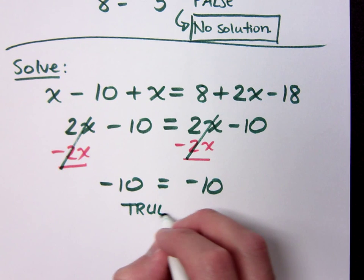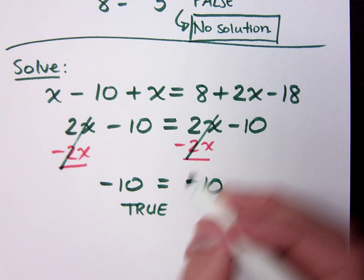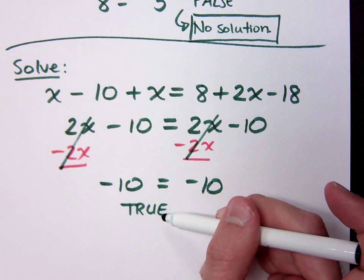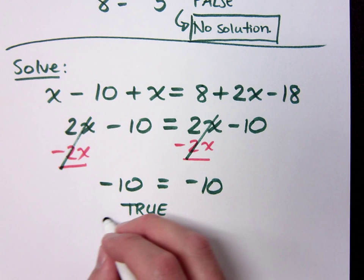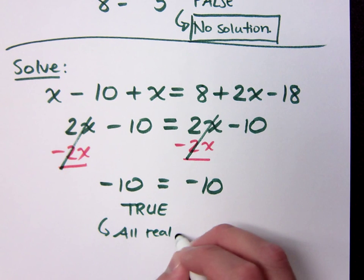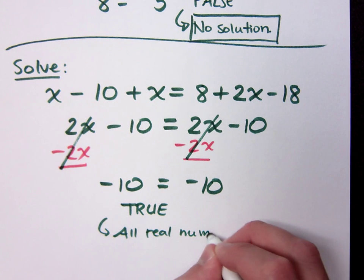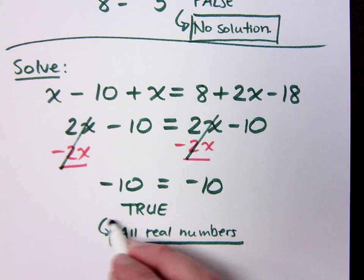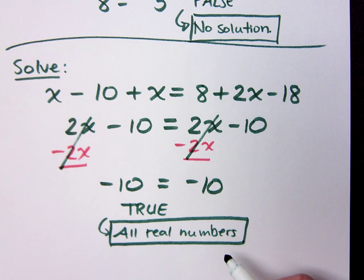Now, a lot of students want to say no solution, but if a false statement means no solution, a true statement should not mean the same thing. But what it does mean is that you would say all real numbers. Now, this statement right here means that you can plug in any real number into the above equation, and it works out. You can plug in 0, you can plug in 100, you can plug in negative 1 third, and it would give you the same thing on both sides of the equation.